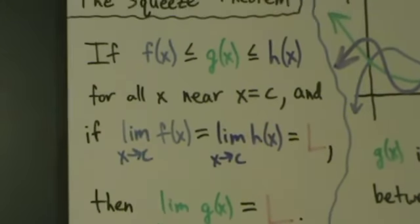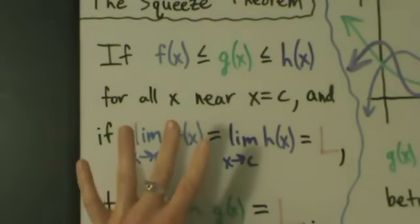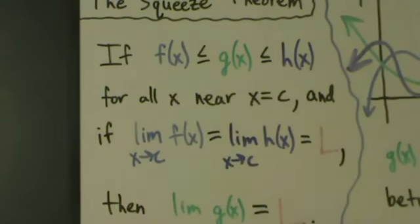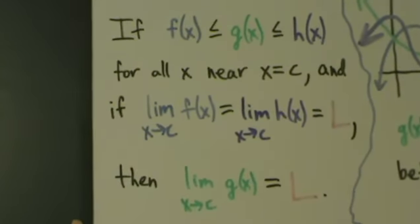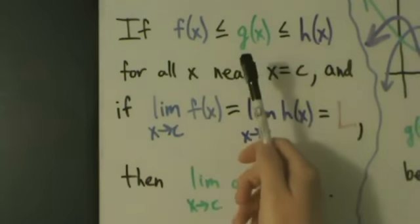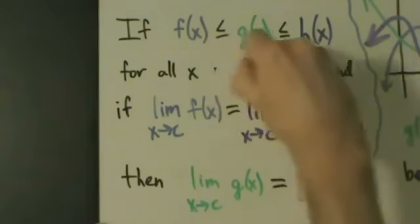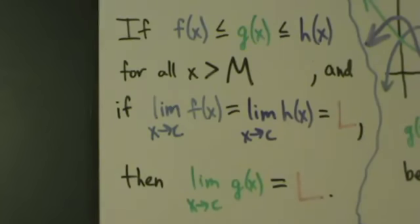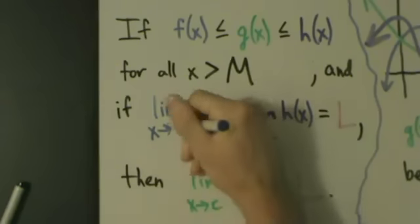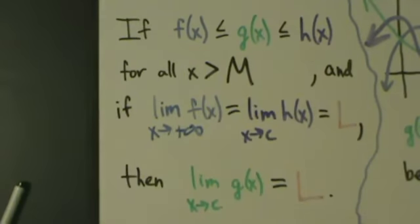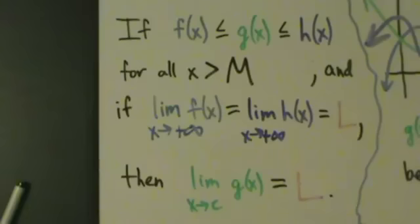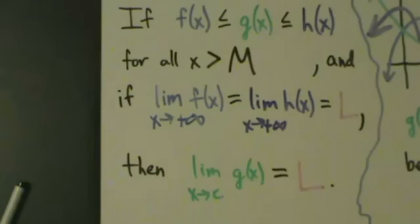We can also apply this to limits at infinity. If f(x) ≤ g(x) ≤ h(x) for all x greater than some big M, and if the limit as x goes to positive infinity of f(x) equals the limit as x goes to positive infinity of h(x) equals L, then the limit as x goes to positive infinity of g(x) also equals L.